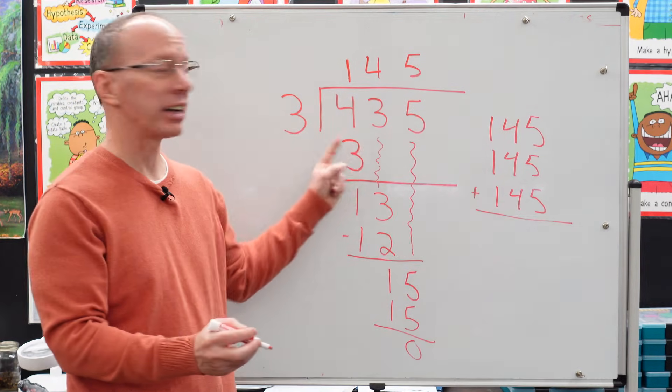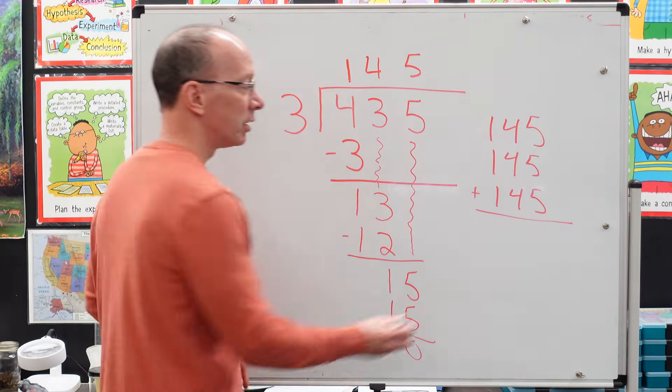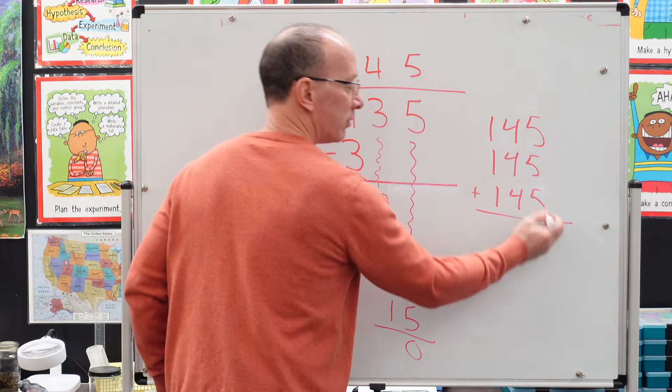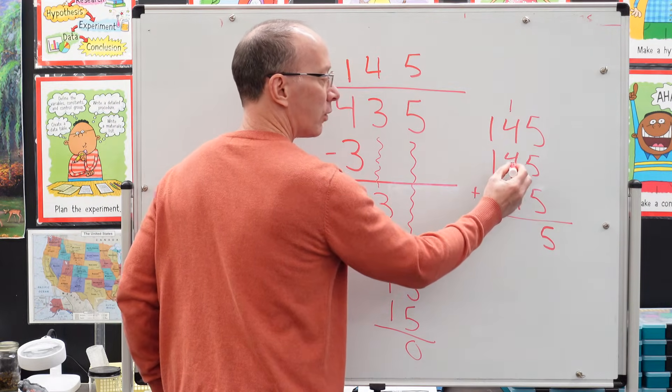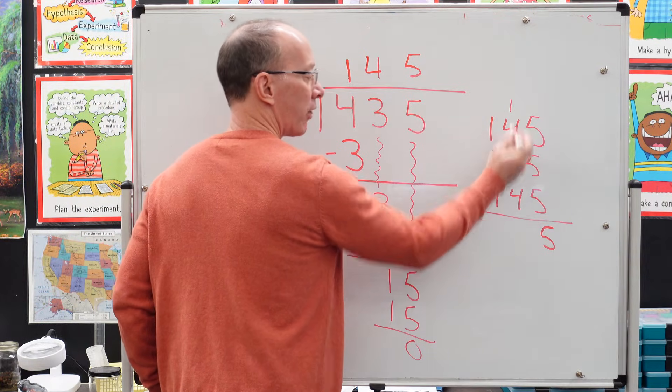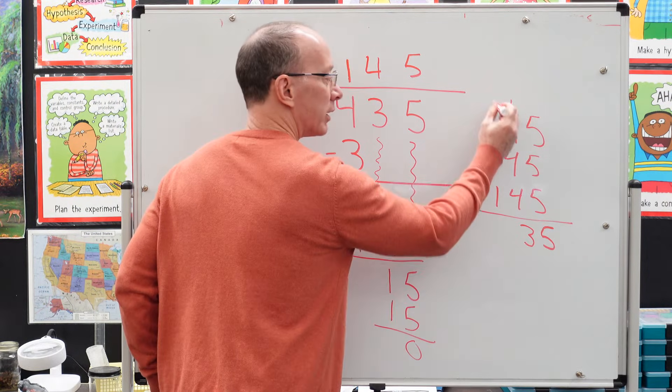So I'm just going to add that up to see if I come up with the same answer. So 5, 10, 15, carry the one, 4 plus 4 is 8, 9, 10, 11, 12, 13. Bring that one up here.